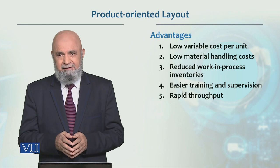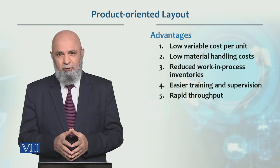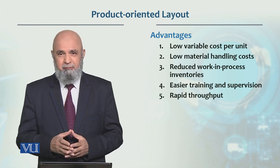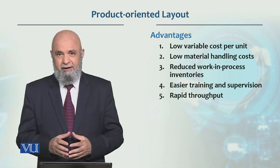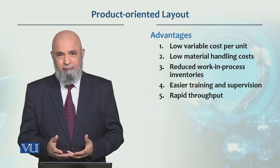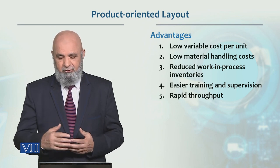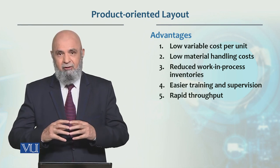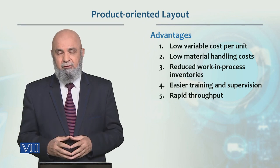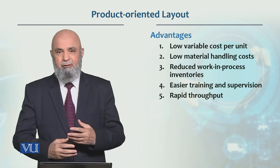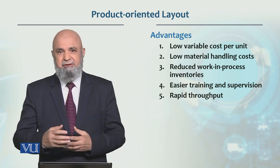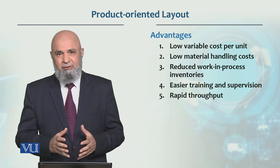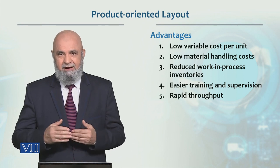The advantages of this type of layout are that the variable cost is low, the material handling cost is low — as conveyor belts move items along the assembly line — and work-in-process inventory is very small. Production is continuous and repetitive. Training and supervision are easy because workers perform the same type of task repeatedly, so learning is fast and improvement is rapid. Throughput is very rapid compared to a process-oriented layout.